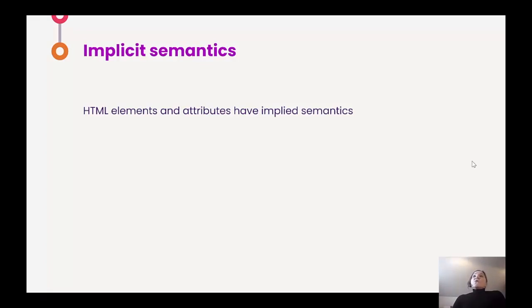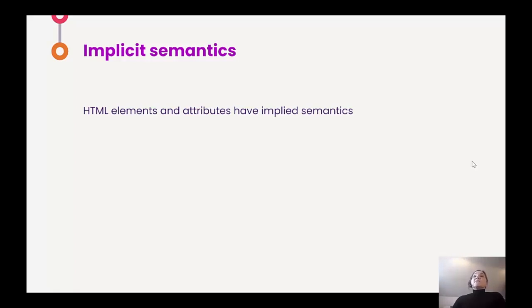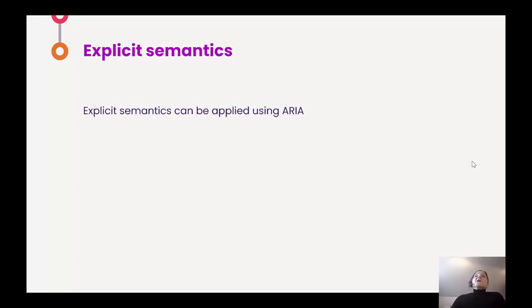We have two sorts of semantic information. Some semantics are implicit. Every HTML element and attribute has implied semantics — that means they have accessibility information stored up in them without you having to do anything other than cause those particular elements and attributes to be used or rendered. There's lots of accessibility information available for you for free. But sometimes we need to explicitly apply some semantic information, and we can do that using something called ARIA, or Accessible Rich Internet Applications. So explicit and implicit are two things we'll come across later in another context.